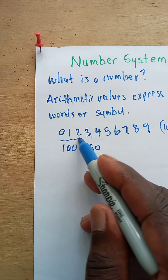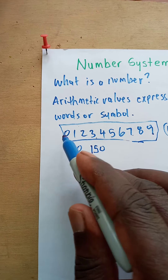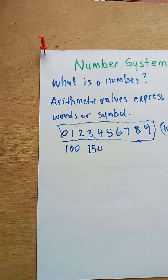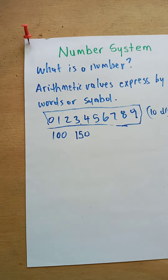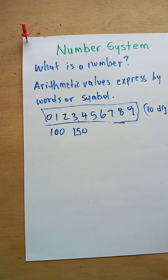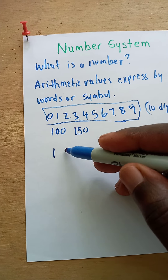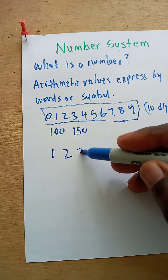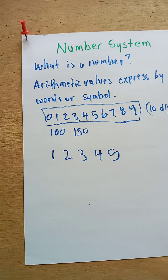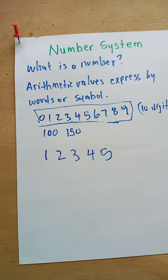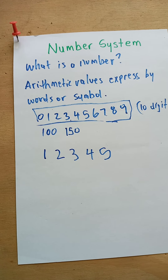These are the ten digits we use in our numerical system — they are symbols. In different languages, they may use different symbols to represent a particular quantity.